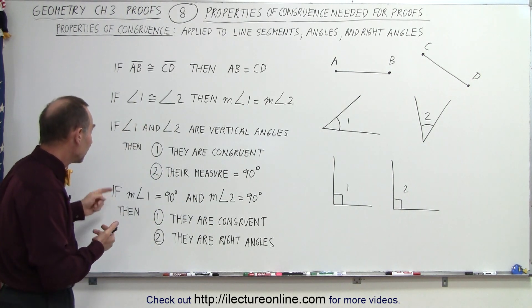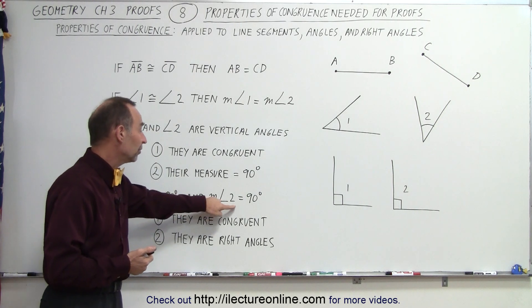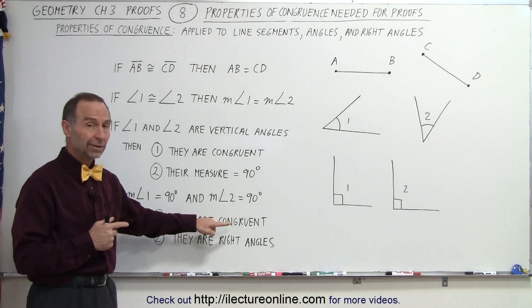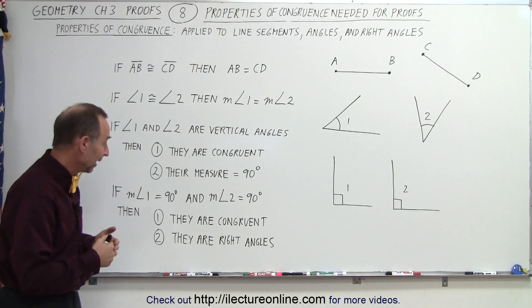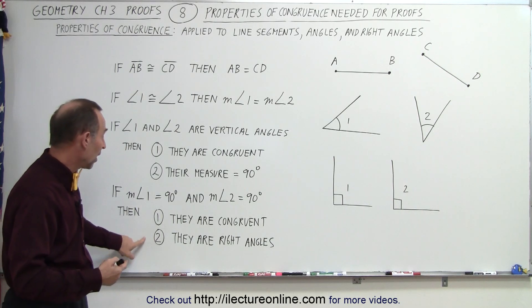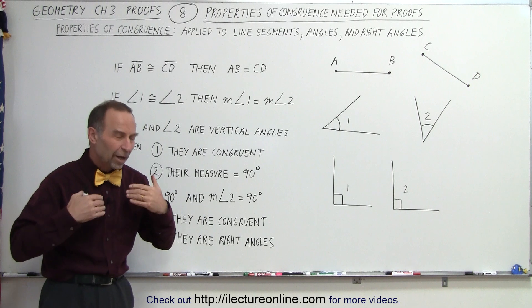If the measure of angle 1 equals 90 degrees and the measure of angle 2 equals 90 degrees, then we can conclude: first, they are congruent because they have the same measure; and second, they are right angles because that's the conclusion when their measure equals 90 degrees.